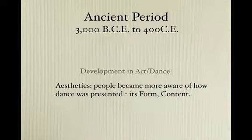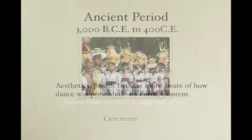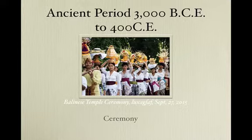In the ancient period, about 3,000 BCE to 400 CE, things started to develop and change in the art of dance. People became more aware of what dance looked like — how it was presented, its form, how it started, where it went, how it ended, and the content of the work. Rituals then became ceremonies, which were a little more dramatic and elaborate, and usually involved a special occasion with a distinct protocol.